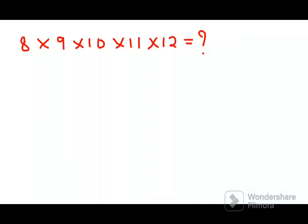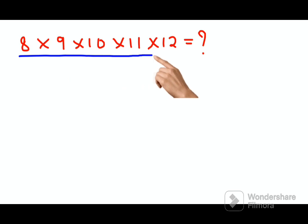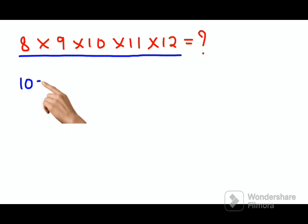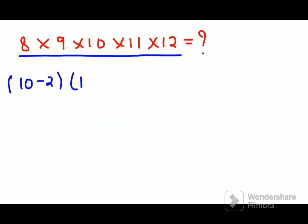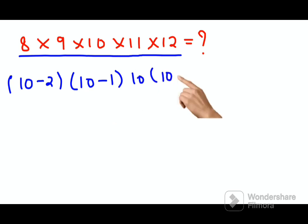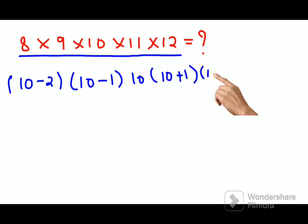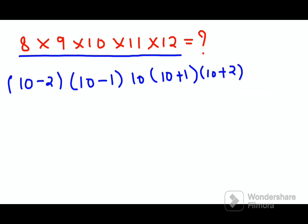Welcome everyone. Today we're going to multiply 8 × 9 × 10 × 11 × 12. I can write 8 as (10 - 2), 9 as (10 - 1), 10 remains as it is, 11 as (10 + 1), and 12 as (10 + 2) — expressing everything in terms of 10.